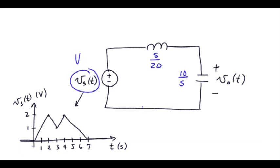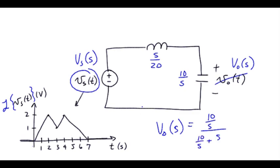So we convert that into the S domain by finding the Laplace transform of Vs of t. We need to find an equation for that. Having done that, the Laplace version of our output is given by a voltage divider. So we have 10 over S divided by 10 over S plus S over 20 times Vs of S. Before we can find our output, we need to find the Laplace domain version of our somewhat elaborate input.